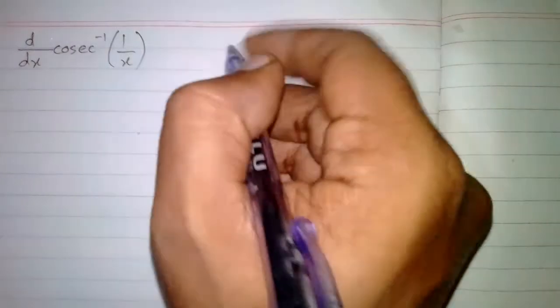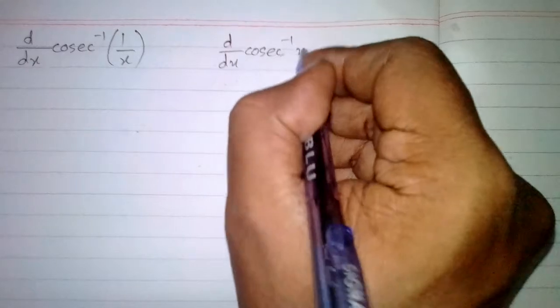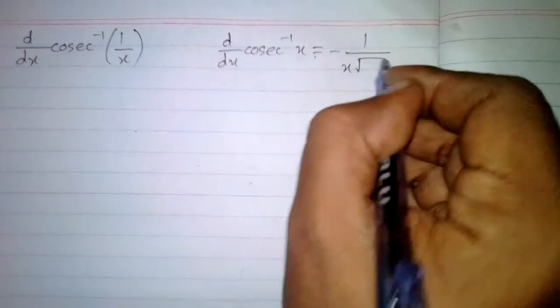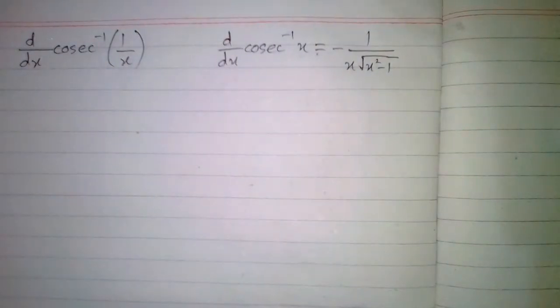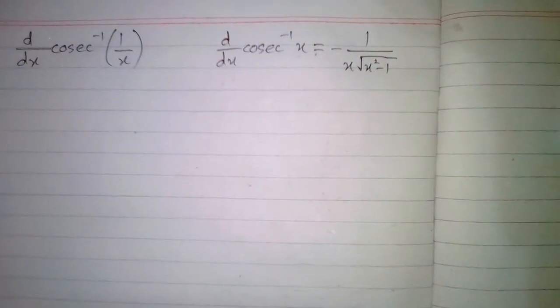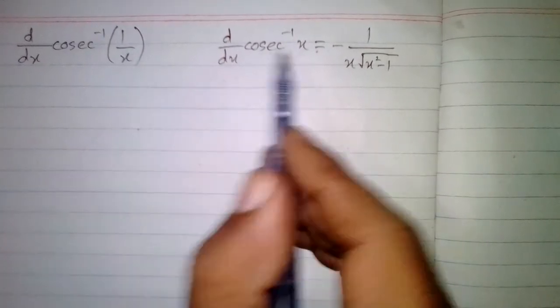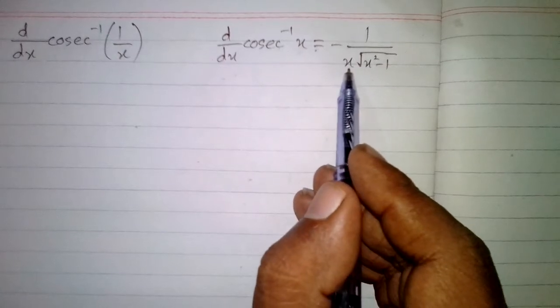In this video we will find the derivative of cosine inverse of 1/x. The derivative of cosine inverse x is −1 divided by x times the square root of x² − 1. We can see that we have 1/x in place of x, so we will put 1/x in place of x.